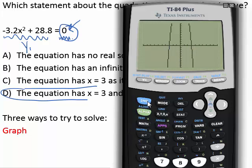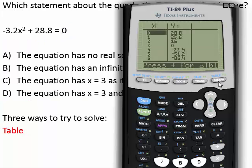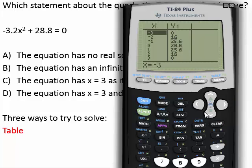We can also check that using a table as a third way by going second graph. So again second graph and we can check negative 3. Negative 3 makes the equation equal to 0. And positive 3 makes the equation equal to 0. So three ways to check your solutions on these.